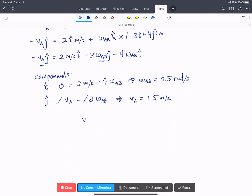So we can write that the velocity of the top of the ladder, VA, the vector equals minus 1.5 meters per second in the j-hat direction.